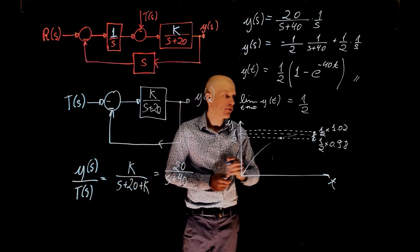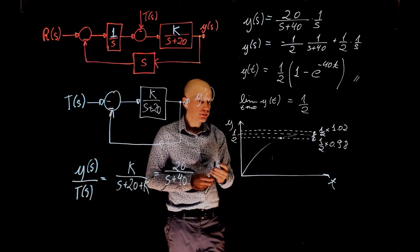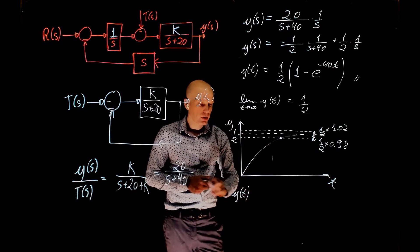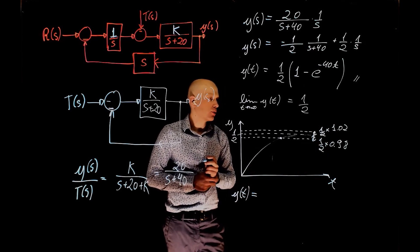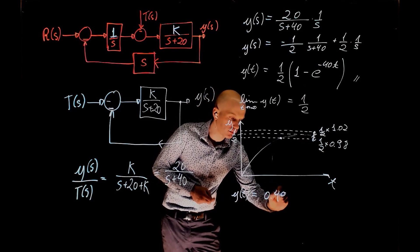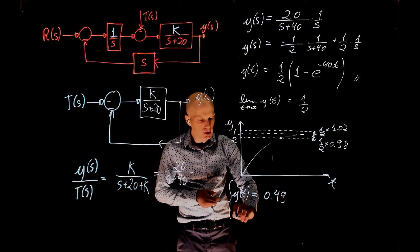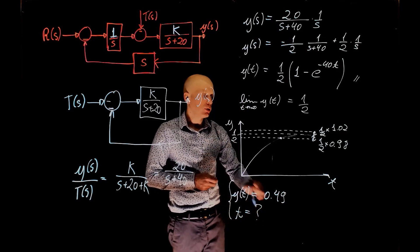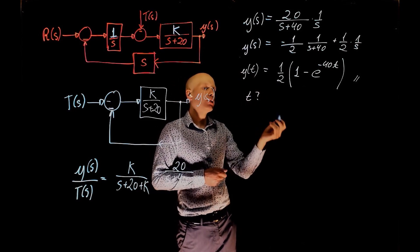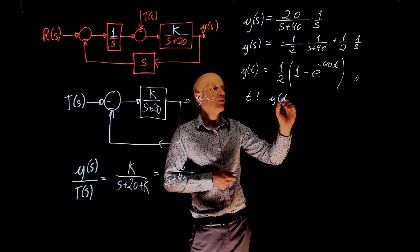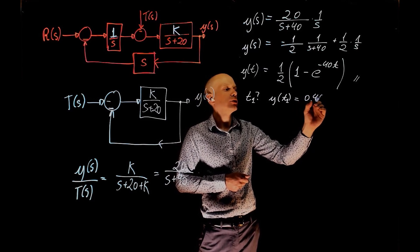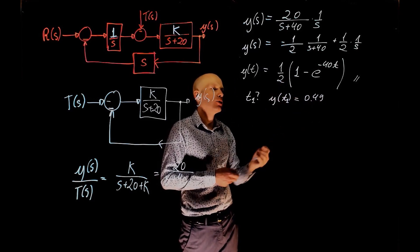So we want now to know this point here that will first take us to within 2% of the final value. That point now corresponds to 1/2 times 0.98. So we are now interested in the value of t that will give us y(t) equals 1/2 times 0.98, that is 0.49. And what is the value of t that will take us to within 2% of the final value, that is y(t) equals 0.49 or 1/2 times 0.98.